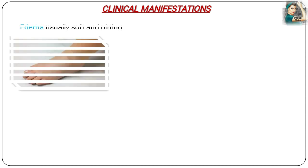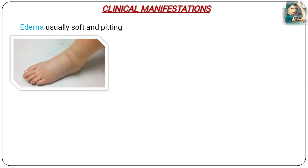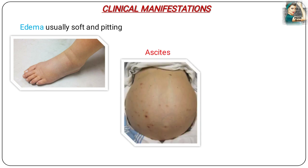Now the clinical manifestations. The most important clinical manifestation in nephrotic syndrome is edema, which is usually pitting. That is, when we apply pressure over the edema site, there remains a dimple on the edema site for some time. The next clinical manifestation is ascites, which is the accumulation of large amounts of fluid in the peritoneal cavity. Others include irritability, headache, and malaise.